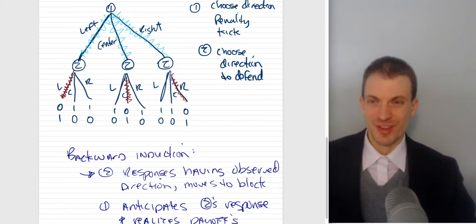So if we can figure this out, presumably the person kicking the penalty kick can figure it out as well. They realize if they go right, it's going to be blocked. Their payoff is zero. If they go center, it's going to be blocked. Payoff is zero. They go left, it's going to be blocked. Their payoff is zero.